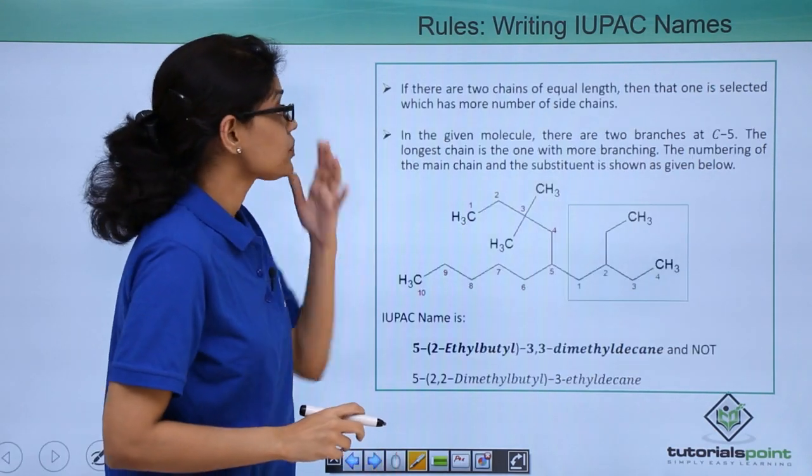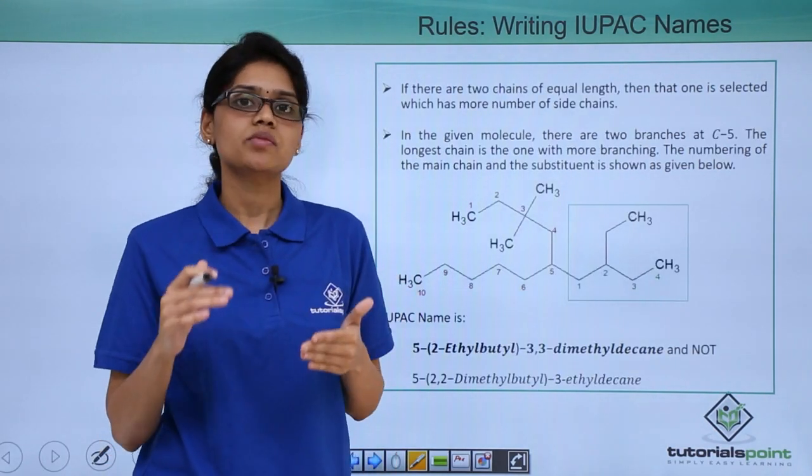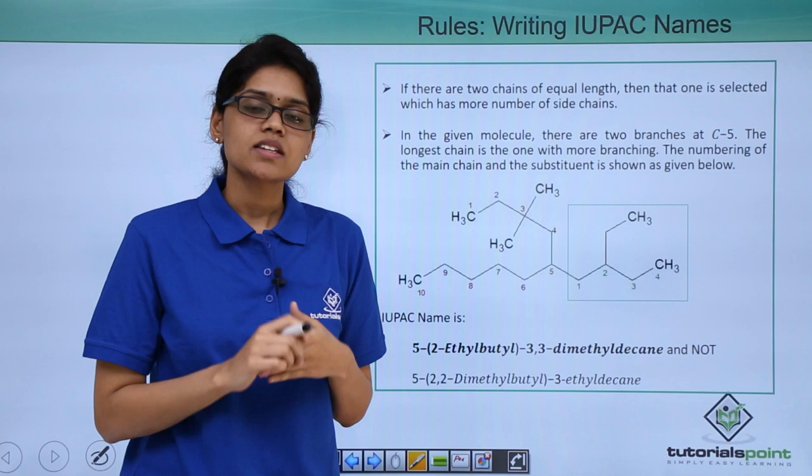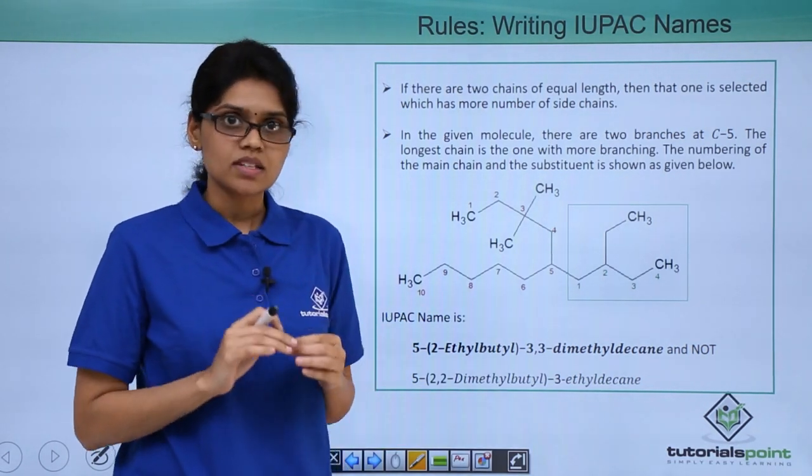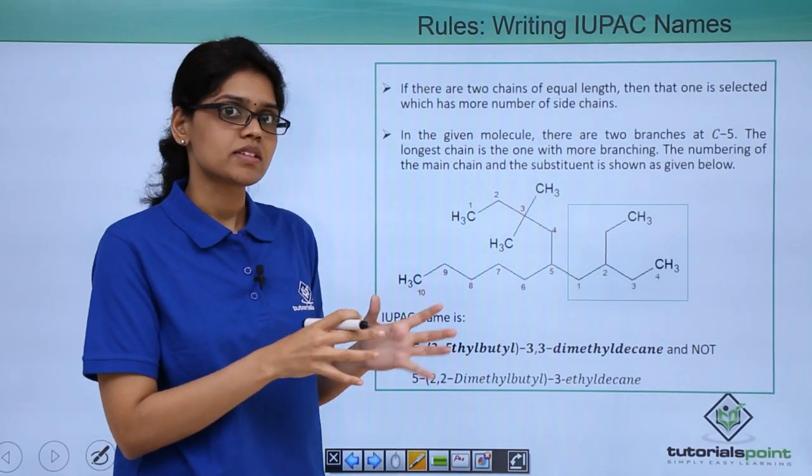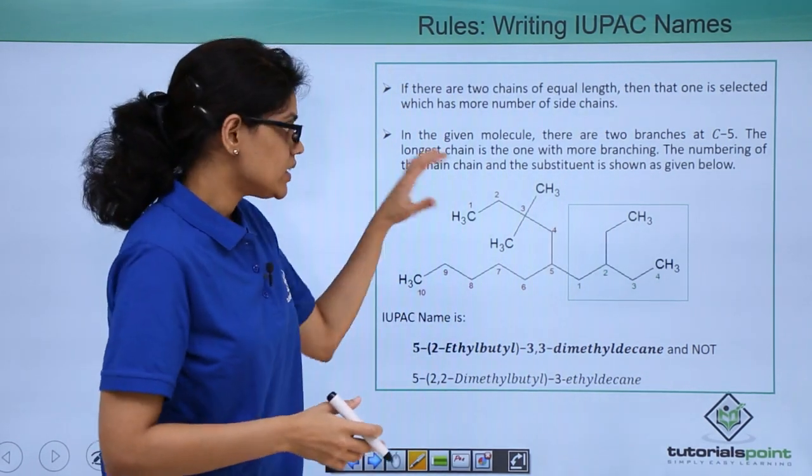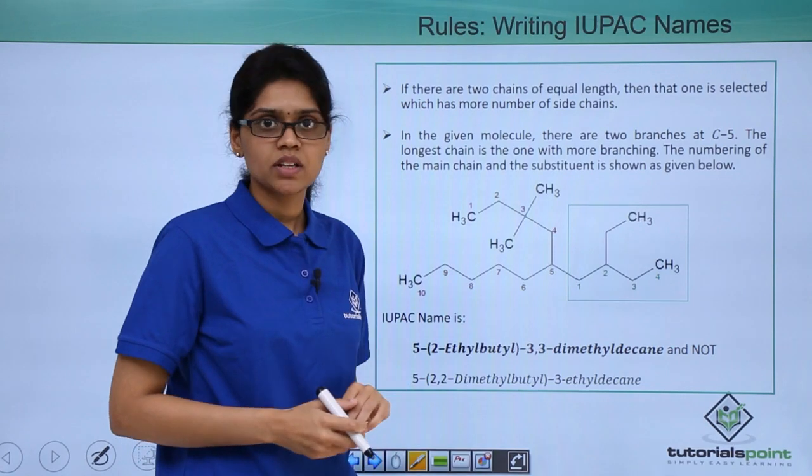The next rule we can see is that if there are 2 chains of equal length, in that case what should be the criteria to select the parent chain? This is a very important concept because lot of questions come based on this particular concept. To understand that, let's have a quick look at this particular structure here.